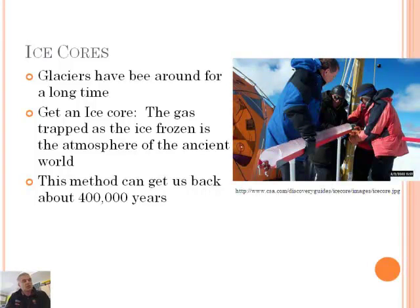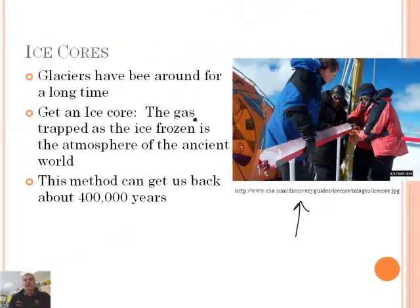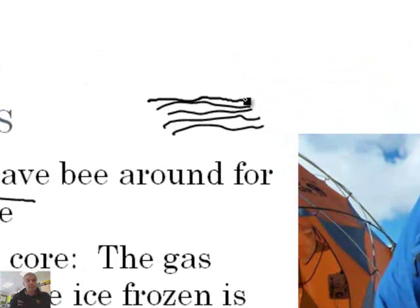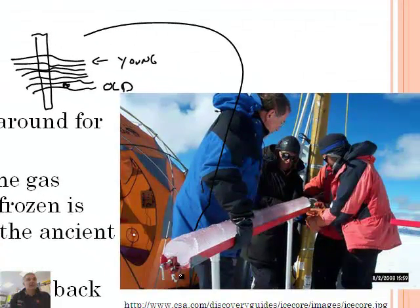The second proxy is called ice cores. Ice cores are pretty cool — basically they drill a hole in ice and collect it. You can see in the picture here that they've drilled a piece of ice from a glacier. Glaciers have been around for a long, long time. It snows in cold places — on tops of mountains or up in the higher latitudes near the poles — and each year the glacier gets bigger. The ice at the bottom is very old and the ice at the top is young, so they have layers.